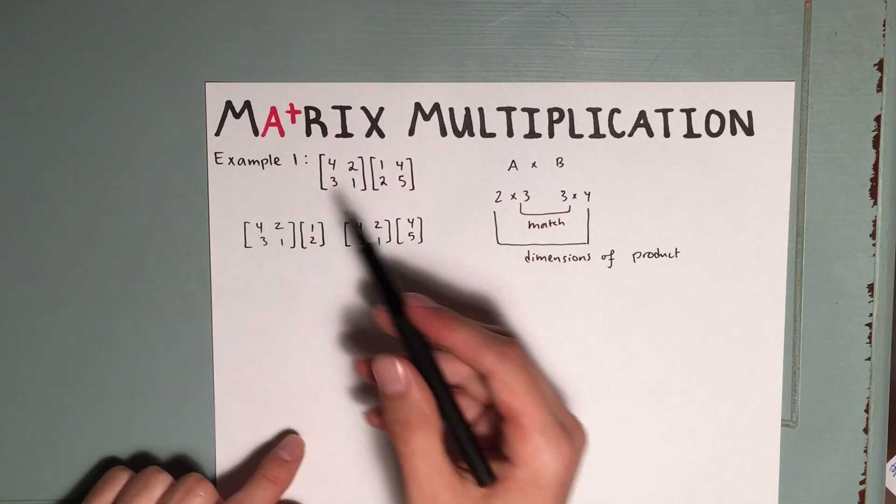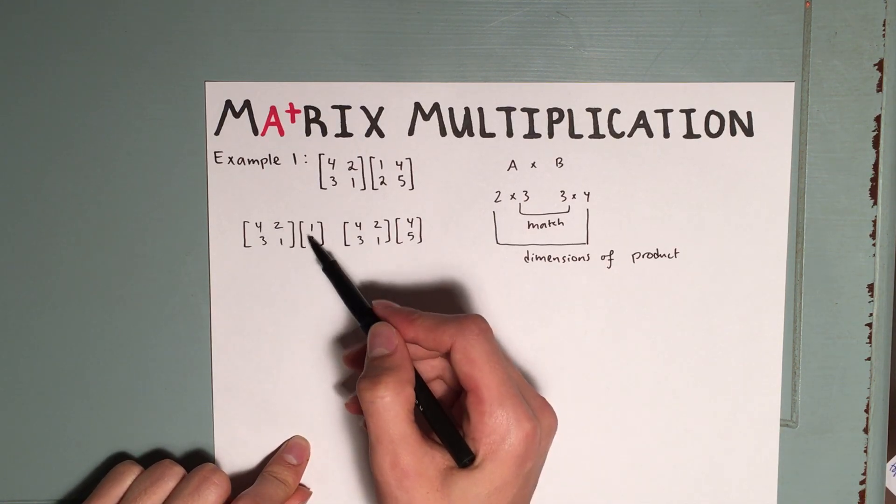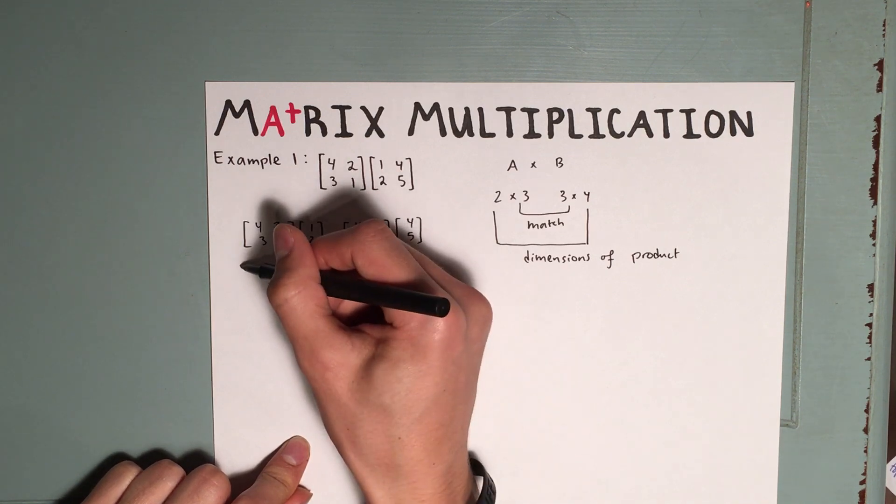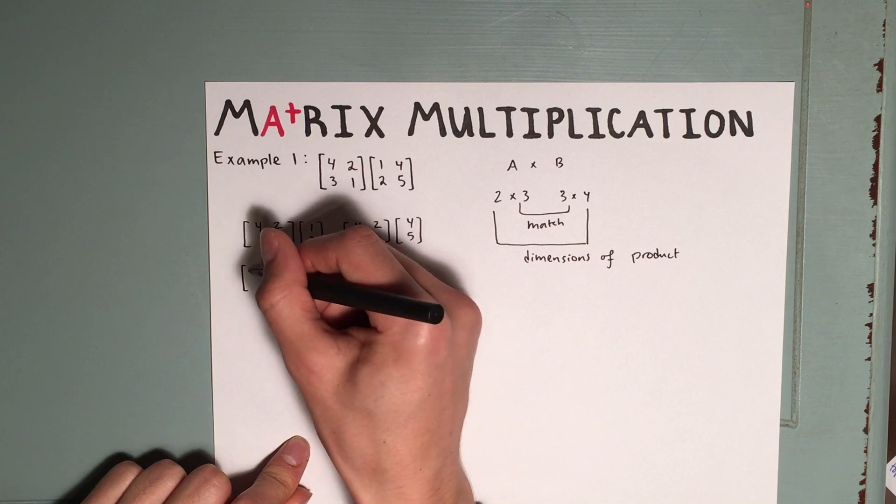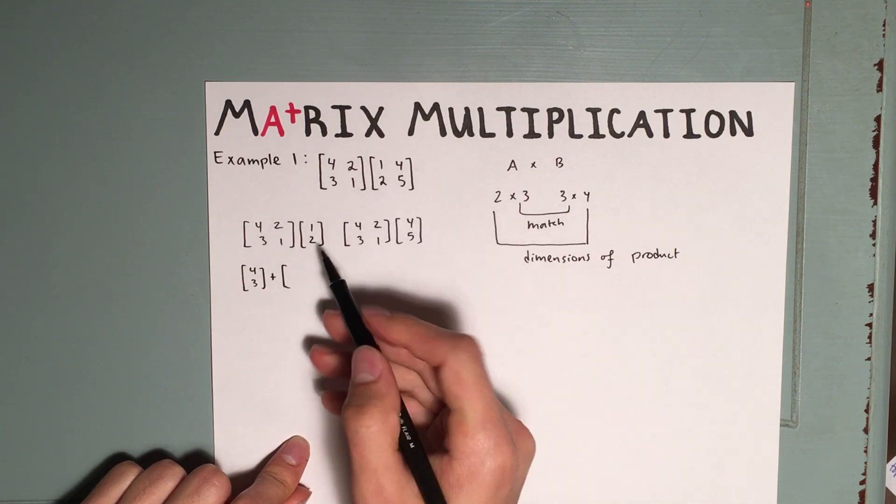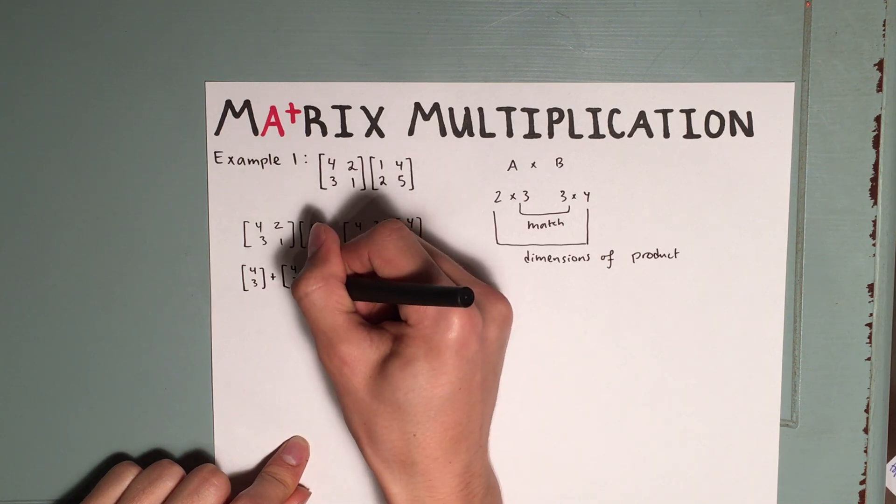So now what we're going to do is distribute the first number of this column to the first column, and the second number to the second column. So we're going to have 4 times 1 and 1 times 3, so that's just 4 and 3. And we're going to add that to 2 times 2 and 2 times 1, so that gives us 4 and 2.